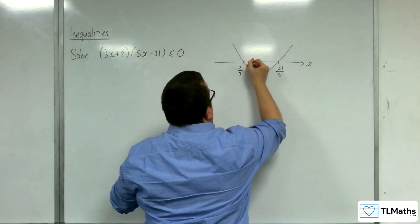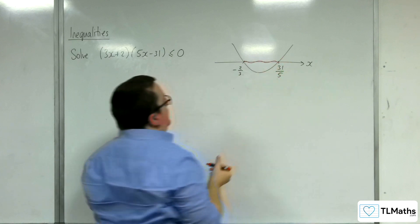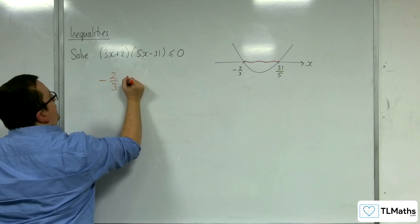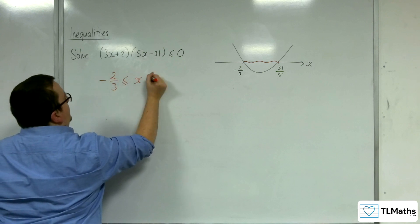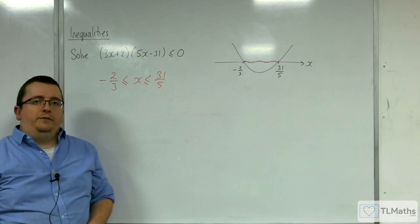So it's below here or equal to at the end, so minus 2 thirds and 31 fifths. So the answer is minus 2 thirds is less than or equal to x is less than or equal to 31 fifths. And that's your answer straight off.